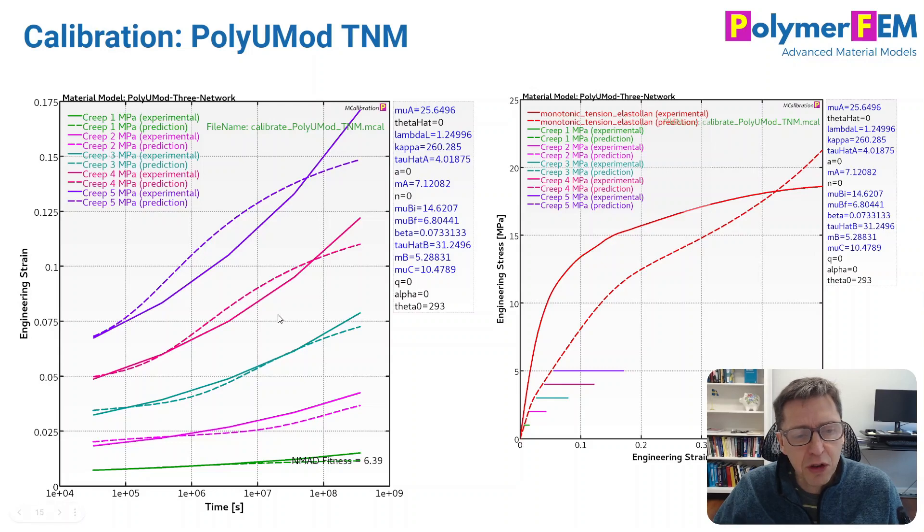You can see that the creep curves look a little bit more realistic at larger strains, larger stresses here. The average error is about 9.4%. So this is something perhaps would be useful, but we can do even better.